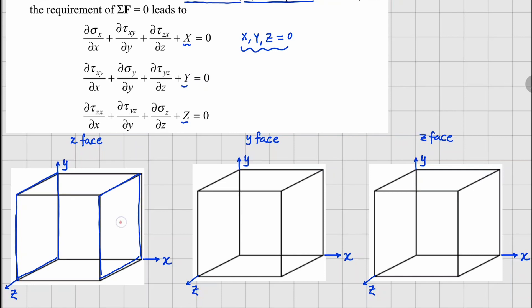On the positive x-face all stress components act in the positive direction, and on the negative x-face everything acts in the negative direction. The normal stress on the right face is sigma_x prime and on the left face is sigma_x, since we move a distance delta_x so the values may differ. The shear stresses are tau_xy prime and tau_xy — on the x-plane, force in the y-direction — and tau_xz prime and tau_xz — on the x-plane, force in the z-direction.